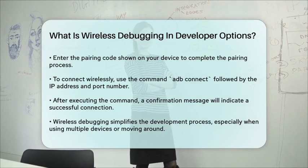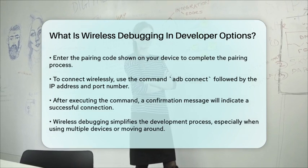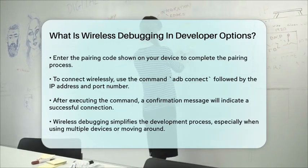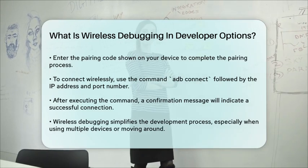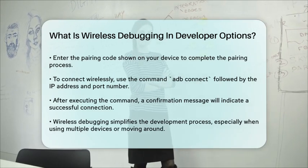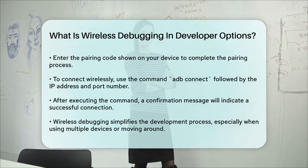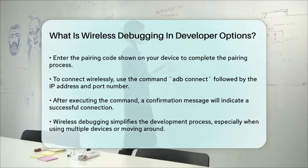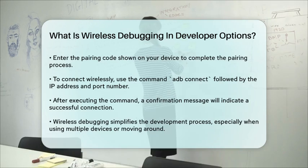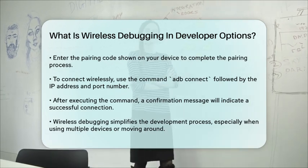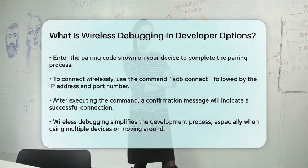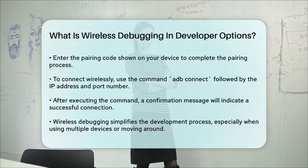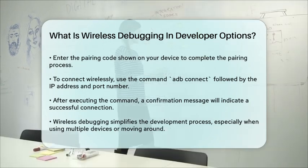With wireless debugging set up, you can deploy and debug your apps without the hassle of a USB cable, making your development process much more convenient and efficient. This feature is especially useful if you're working with multiple devices or need to move around while debugging your apps.